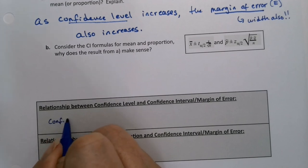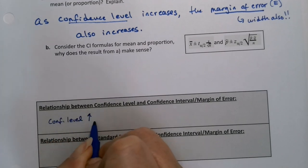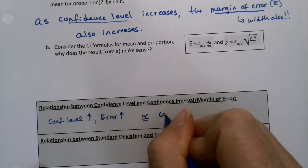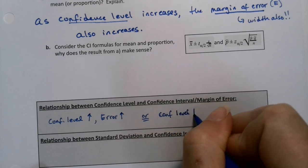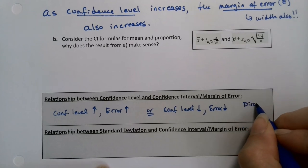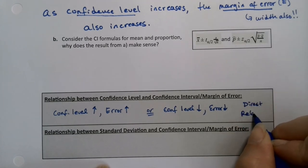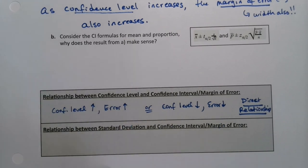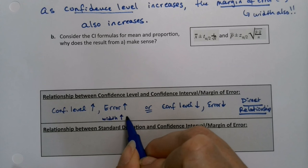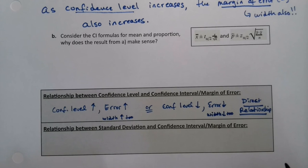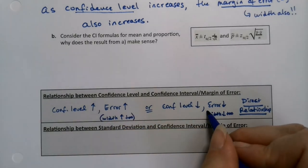If confidence level goes up, error goes up. If confidence level goes down, error goes down. It's called a direct relationship — as opposed to an inverse relationship, which we saw on the previous page. If one goes up, the other goes up; one goes down, the other goes down. And if error goes up, width goes up also — because width is error's buddy.